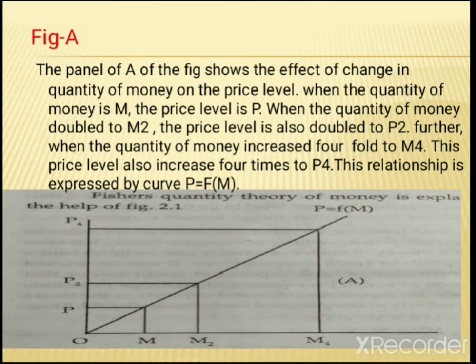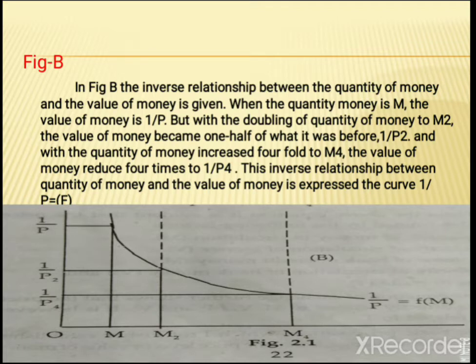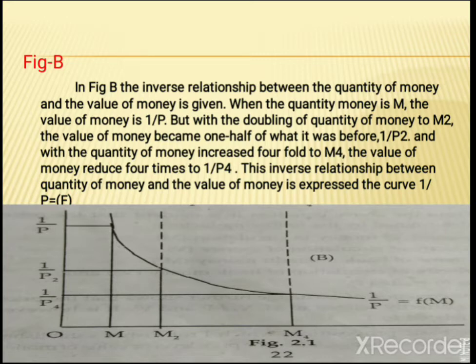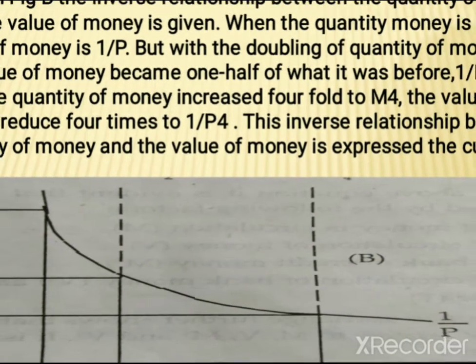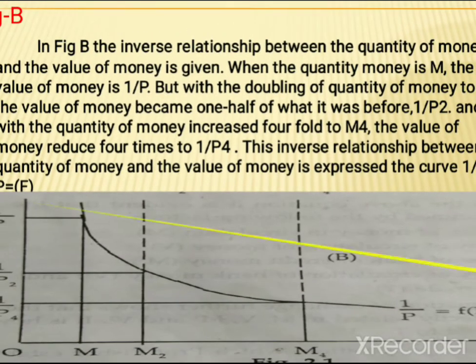Next, we can see Figure B. In Figure B, the inverse relationship between the quantity of money and the value of money is shown. When the quantity of money is M, the value of money is 1/P. With the doubling of quantity of money to M2, the value of money becomes half of what it was before, that is 1/P2. And with the quantity of money increased to M4, the value of money reduces to a quarter, that is 1/P4. This inverse relationship is expressed by the curve 1/P = F(M).